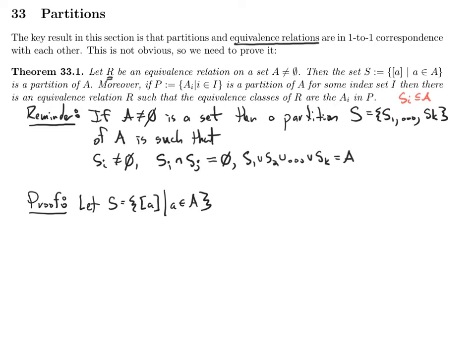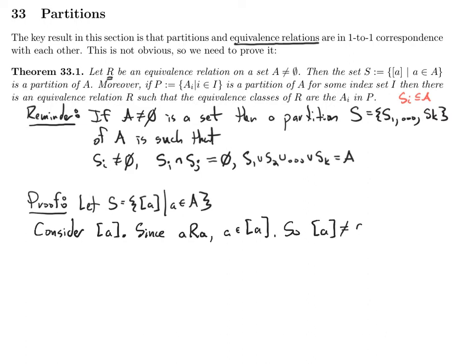Let's show that each equivalence class is non-empty. Consider the equivalence class of a. Since R is an equivalence relation, we know that a is related to itself — it's reflexive. Since a is related to a, a is of course in the equivalence class of a. So we have something in the equivalence class, meaning all of these classes are non-empty. First part: done.